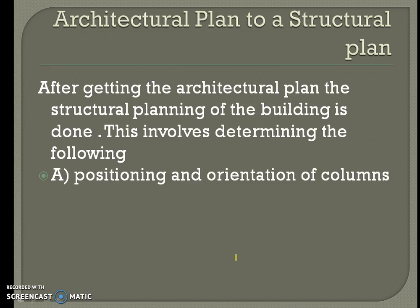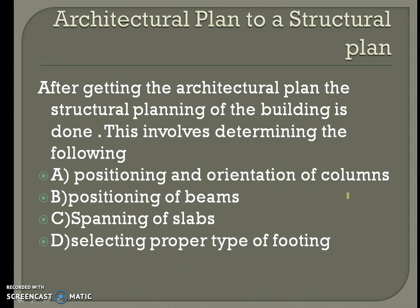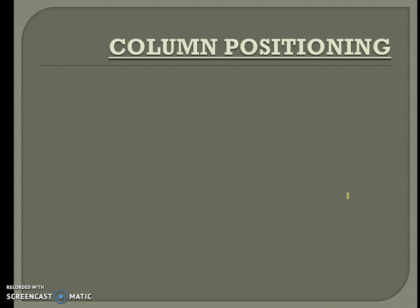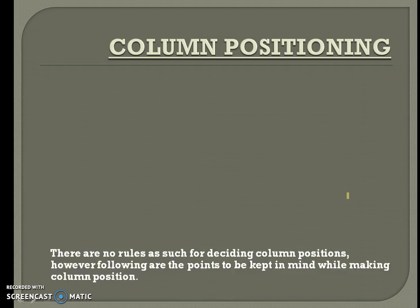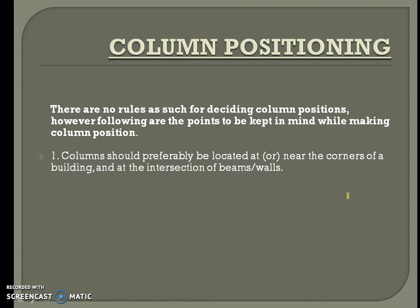To convert an architectural plan into a structural plan, the following points have to be kept in mind: first, positioning and orientation of the columns; next, positioning of beams, spanning of slabs, and selecting the proper type of footing. For column positioning, the first point is that columns should preferably be located at the corners of the building and at the intersection of beams and walls, as shown in the drawing.